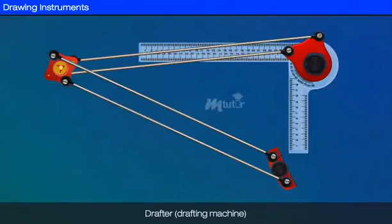The last is a drafting machine. The drafting machine has the advantage of combining T-square, scales, protractors, and set-squares. One end of the drafter is clamped at the left top end of the drawing board by a screw provided in the drafter.